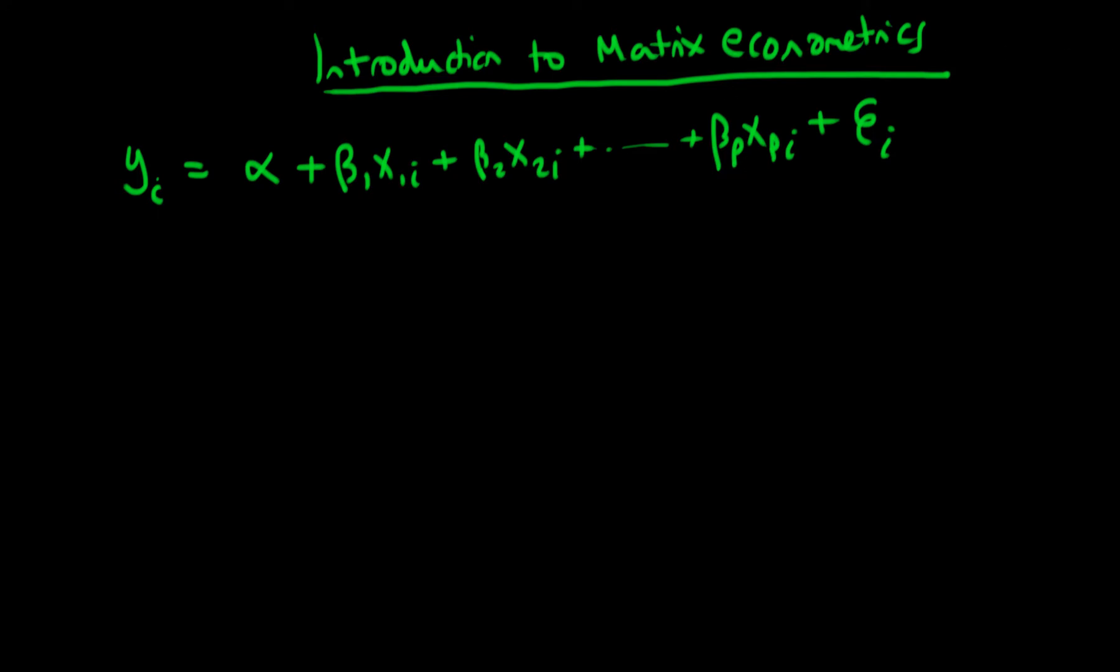The idea here is that the subscript i means that implicitly, I'm assuming that this model holds for each individual within my population. And notice that this is quite a clunky way of writing things. I've got my x1i plus x2i, all the way up to xpi. It'd be quite nice if there was a simpler way to write this down for the case of a multivariate model. And it turns out that the matrix formulation of econometrics is the way in which we can do this.